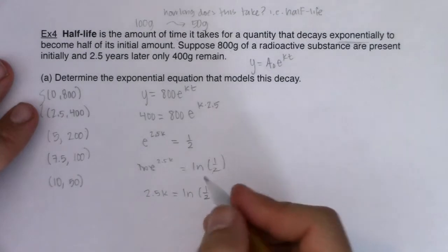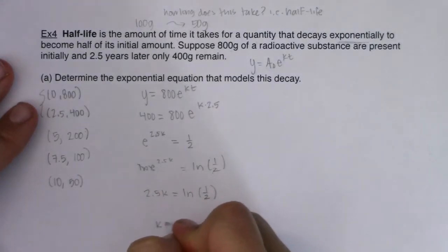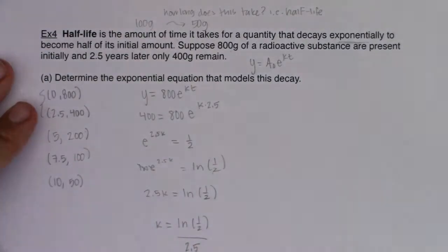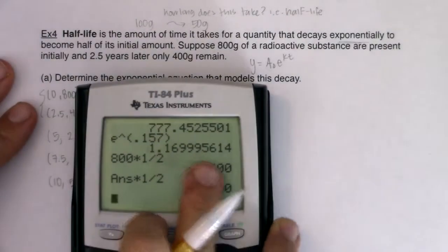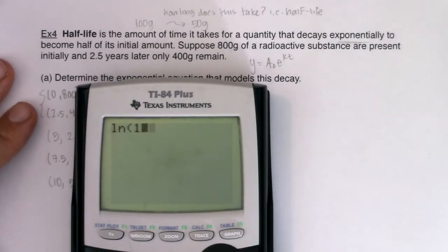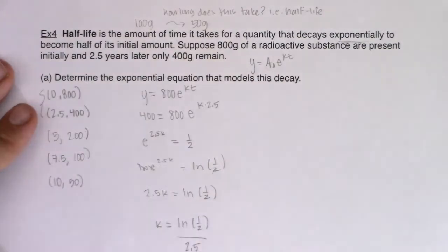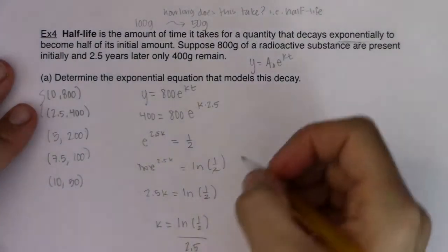I can calculate that number on my calculator. I'm going to divide both sides by 2.5 and see what this k value is equal to. Let's head over to my calculator. I would have the natural log of one-half divided by 2.5, and that would be about negative 0.2773. It should be negative—this is exponential decay at this point.